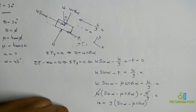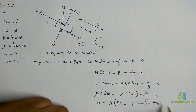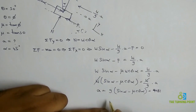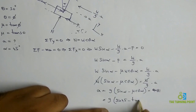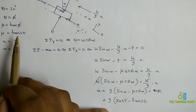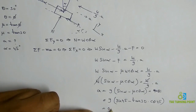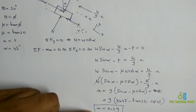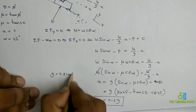The problem states that the block slides when alpha equals 45 degrees. Substituting alpha equals 45 degrees and mu equals tan 30 degrees into the formula: a equals g times (sin 45° minus tan 30° times cos 45°). Simplifying this gives 0.3g. You can also substitute g equals 9.81 m/s² to get the numerical value.